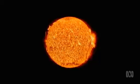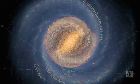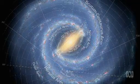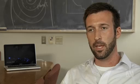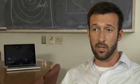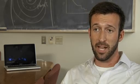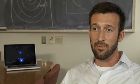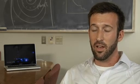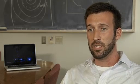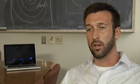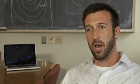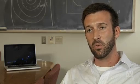Our star, the Sun, is in the Milky Way. The Milky Way is a spiral galaxy that actually is a fairly common galaxy within the local universe. We think that about 70% of local galaxies are star-forming discs that have spiral arms of some sort.